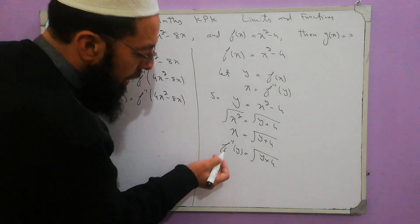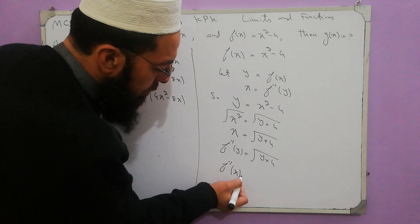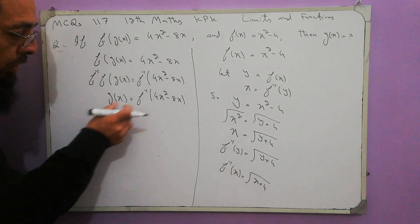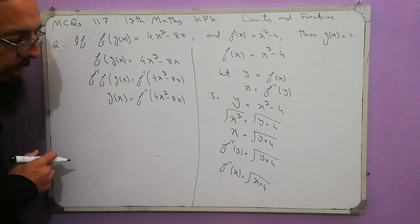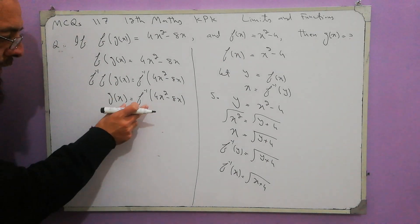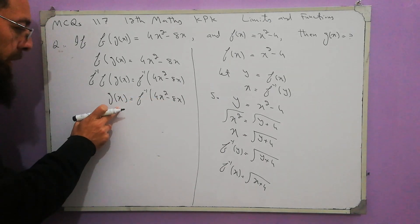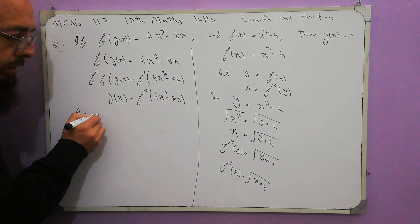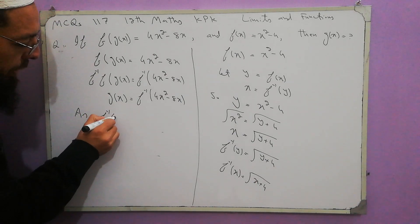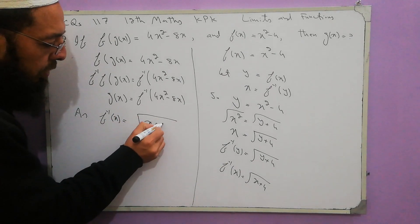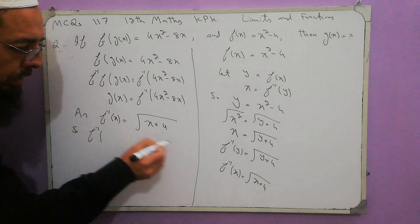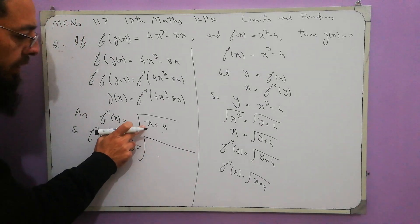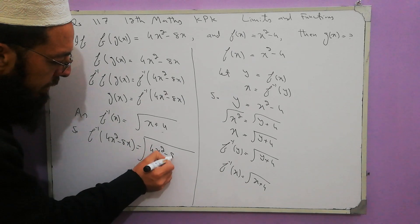But I have to find f-inverse of x, so put x here: f-inverse of x is equal to the square root of x plus 4. So f-inverse of 4x squared minus 8x will be: f-inverse of 4x squared minus 8x is equal to g of x. I have to find f-inverse of 4x squared minus 8x. As we know f-inverse of x is equal to the square root of x plus 4, so put 4x squared minus 8x here: the square root of 4x squared minus 8x plus 4.